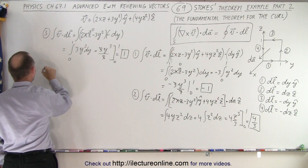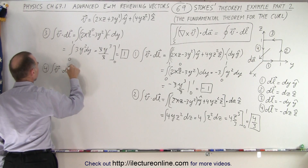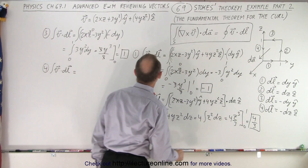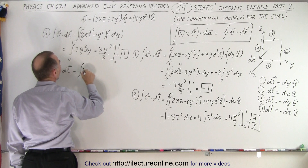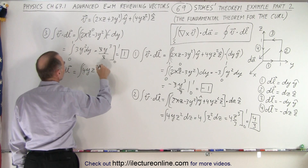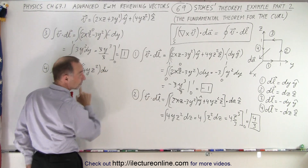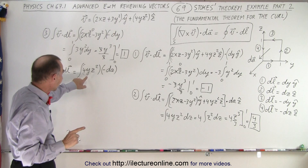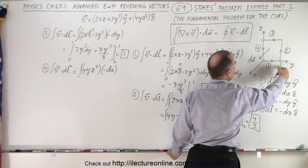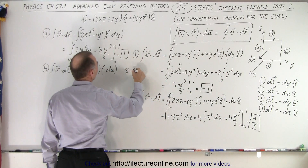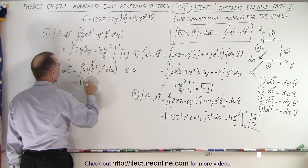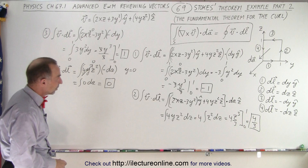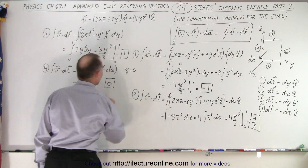One more path to go — path number four. The integral of V dot DL: we're integrating along the z direction so only the z component survives. That gives the integral of 4YZ squared times negative DZ. However, on path number four Y is equal to zero, so 4YZ squared goes to zero. We have the integral of zero DZ, which equals zero. The result of the fourth integral is zero.